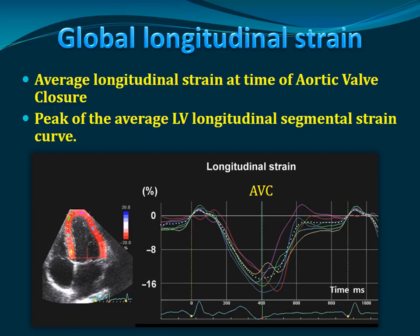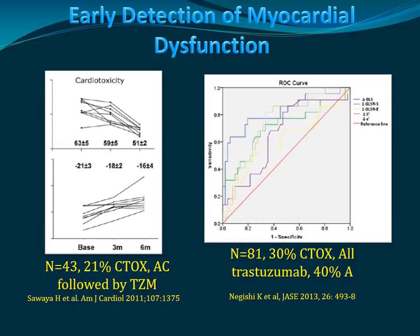If we look at studies about strain and LVEF, we can see that the changes in strain are earlier than changes in EF. The left side graphs show near-identical EF but already significant decrease in longitudinal strain — the global longitudinal strain. Looking at all parameters examined, the best ROC curve is for GLS, or global longitudinal strain.